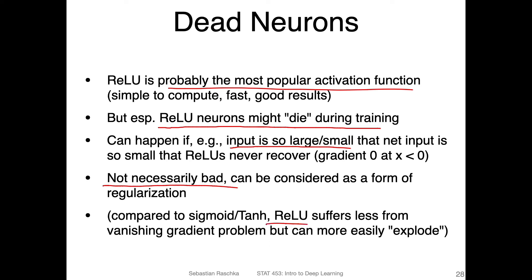One advantage of ReLU compared to sigmoid or tanh is that it suffers less from the vanishing gradient problem, because the ReLU gradient is either zero or one. In the worst case you have the dead neuron, but if you have a positive net input, you always have a strong gradient of one. Technically, it could lead to exploding gradient problems if values from other parts of the network are greater than one. I will talk more about vanishing and exploding gradients when we cover recurrent neural networks later.